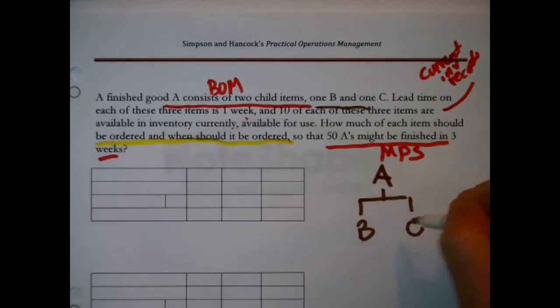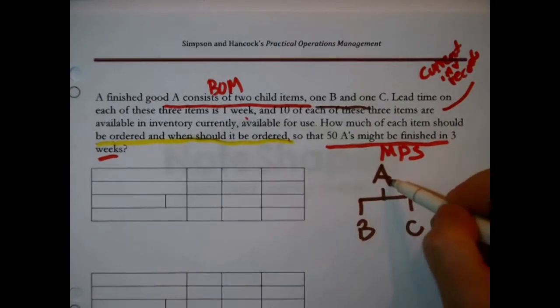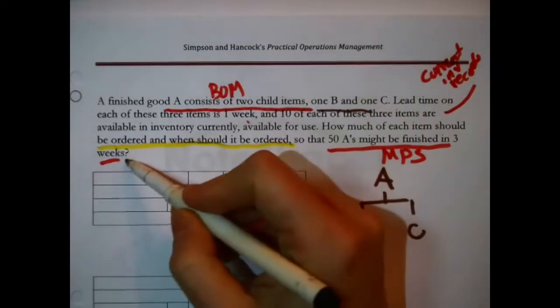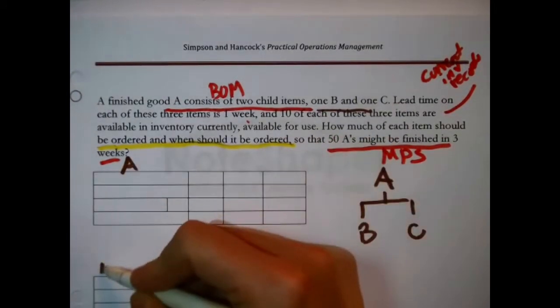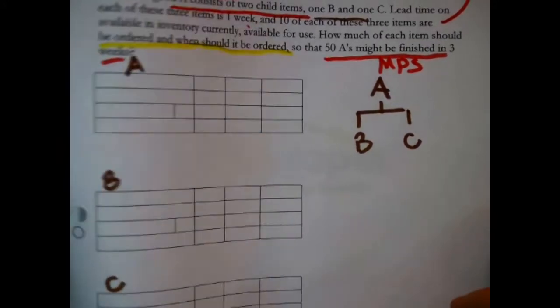Now, the next step in MRP is to set up the records. That means I need one record for each one of these items. That's why there are three of these empty tables.